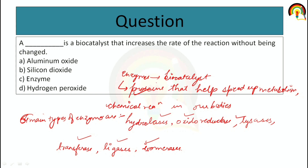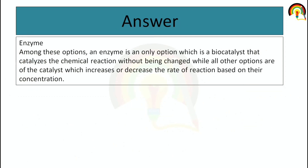A biocatalyst that increases the rate of the reaction without being changed — the option is Enronium Oxide, second is Silicon Oxide, third is Enzymes, and fourth is Hydrogen Peroxide. The correct answer is Enzymes. Enzymes are the biocatalyst, and enzymes are the only option which is a biocatalyst that catalyzes the chemical reaction without being changed. All other options are catalysts which increase or decrease the rate of reaction based on their concentration.